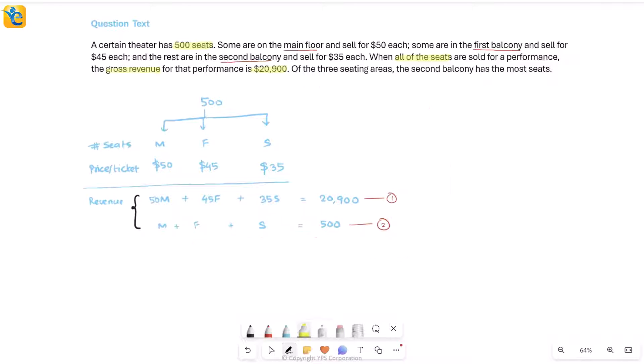There's still more we haven't read. It says of the three seating areas, second balcony has the most seats. This is helping us compare these three numbers. So s is greater than m and greater than f. Now we have completely used up everything that was given to us. Creating these equations really was the main thing, where you simply translated all the information given.